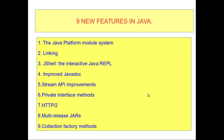Today I am going to explain about Java 9 features. Java 9 has nine features updated from the existing Java 8 version: first, Java Platform Module System; second, linking; third, JShell; fourth, improved Java documentation; fifth, Stream API; sixth, private interface methods; seventh, HTTP/2; eighth, multi-release JARs; ninth, collection factory methods.